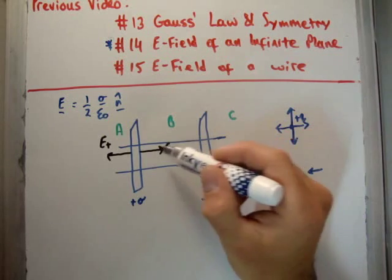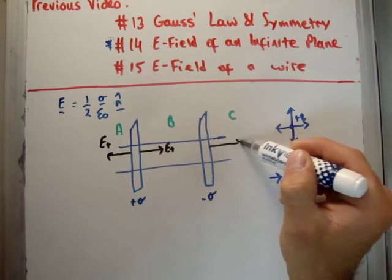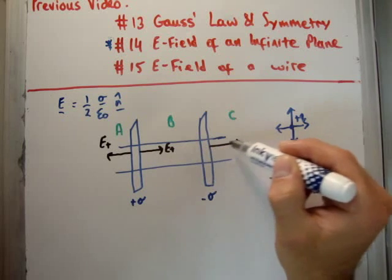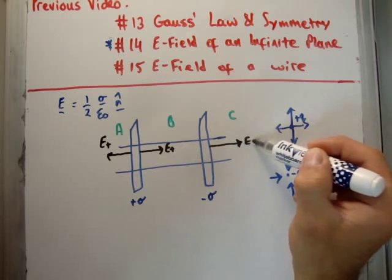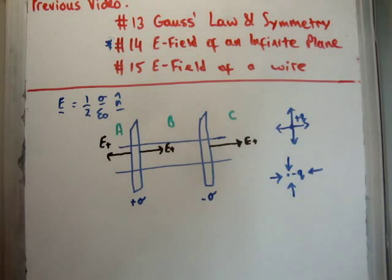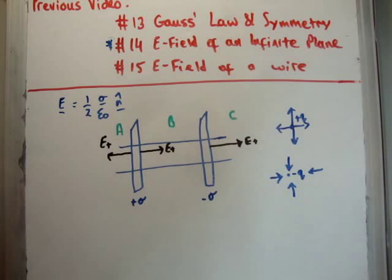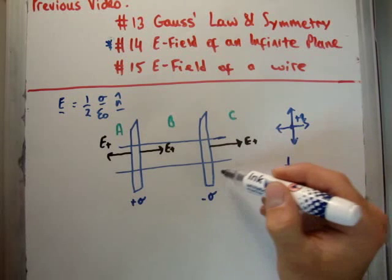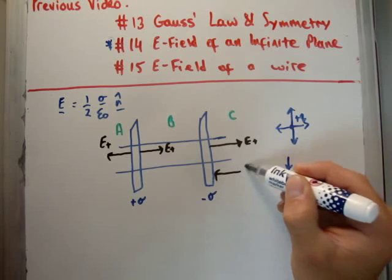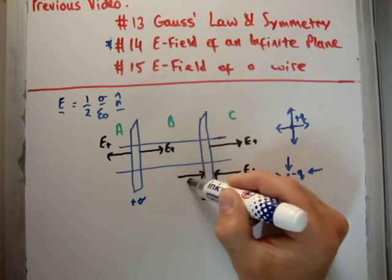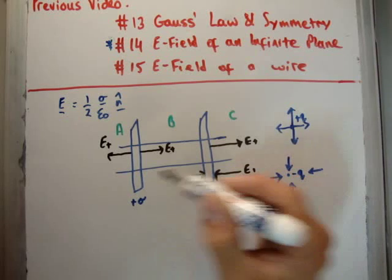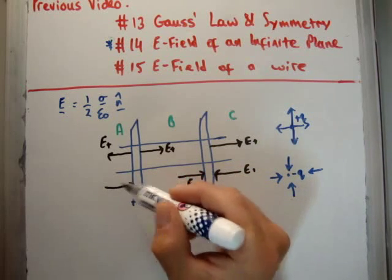Now, over here, it's continuing on. So the electric field is still in that direction. Okay, that's E plus again. But the electric field on the negative charge is going to be towards it. So we're going to have E minus. We're also going to have E minus here. Sorry, that's a minus. And also, of course, we're going to have an E minus here.